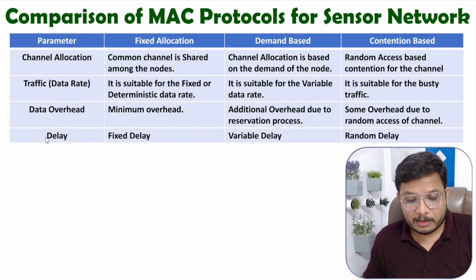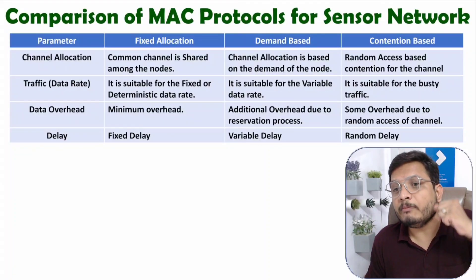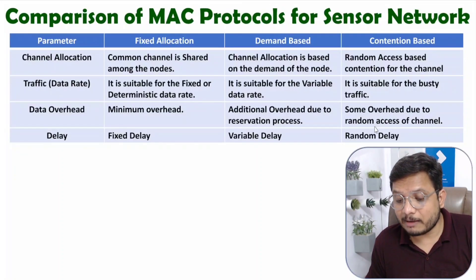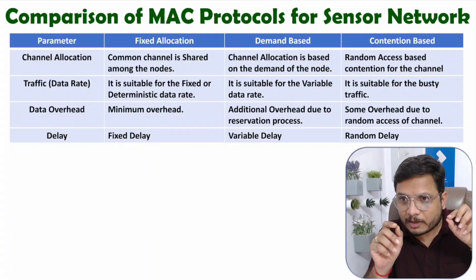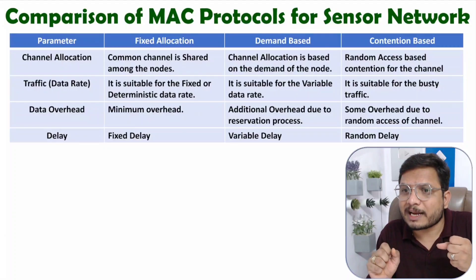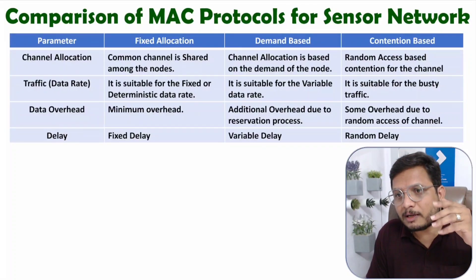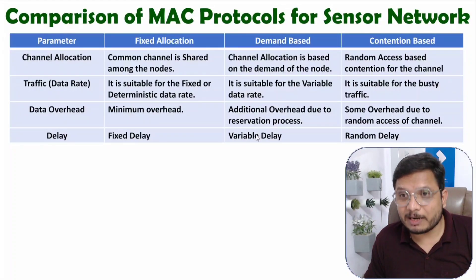The next parameter is delay. With fixed allocation, fixed delay is there. In demand-based, variable delay is there — a node must wait for its turn based on reservation, so the delay varies but is well-defined. In contention-based, random delay occurs because when many nodes access the channel simultaneously, some nodes may not be able to access it, making their delay unpredictable.